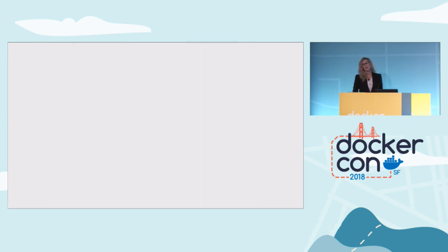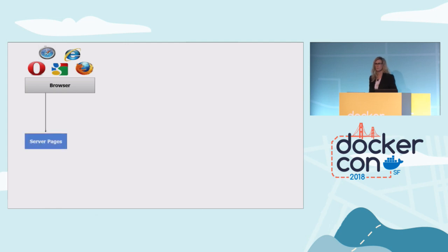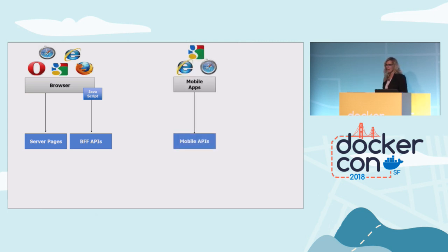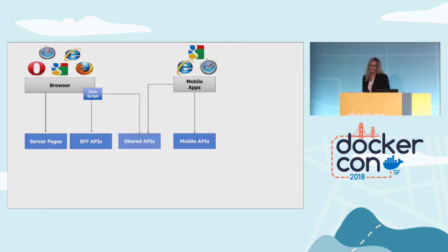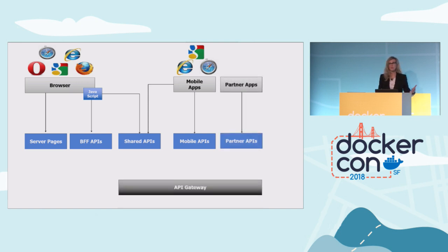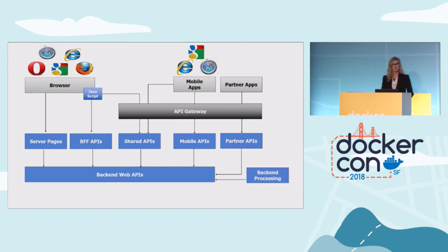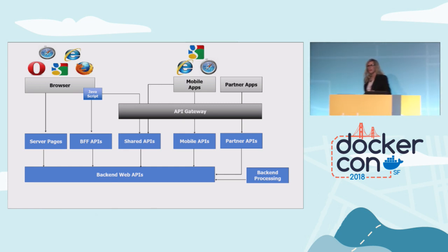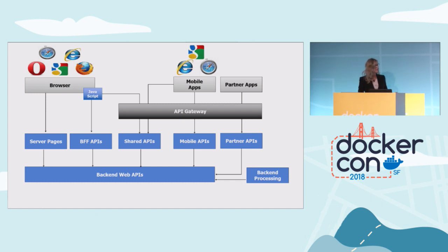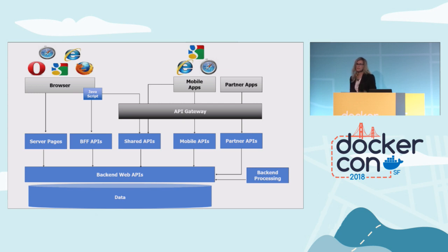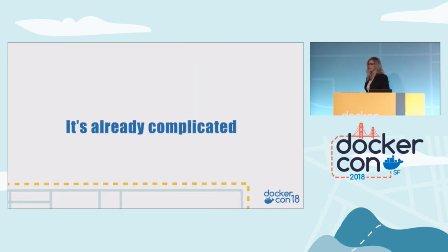Let's start with what we do today with applications. We build web apps for many browsers, responsive apps, backend server apps or SPAs, mobile apps that talk to APIs, backends for those mobile apps hopefully separate, shared APIs, third-party APIs that need API management, and backend processing. This is hello world today — we're already dealing with a distributed hello world, and it's also our monolith, because a lot of these end up with crossover related code.